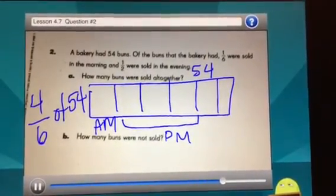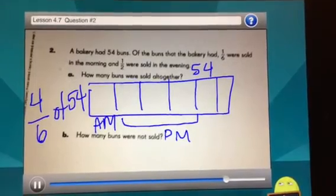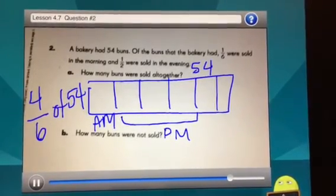Of tells us that we need to multiply. If I'm able to find that, we should be able to find out that number that aren't sold.